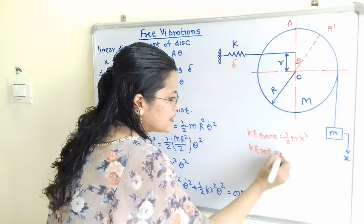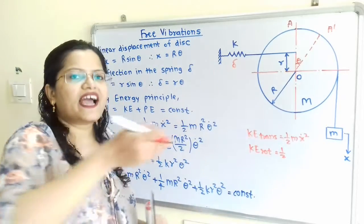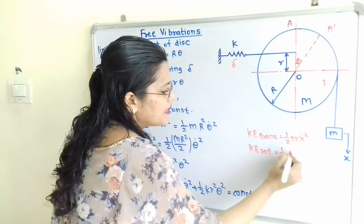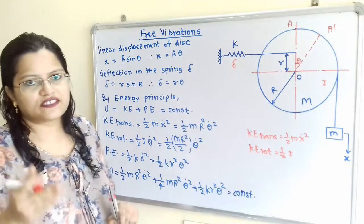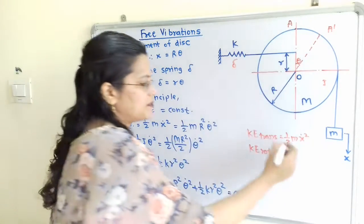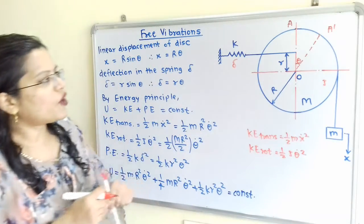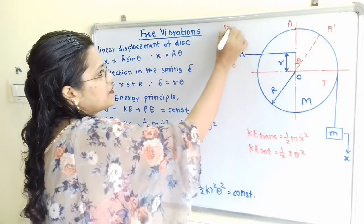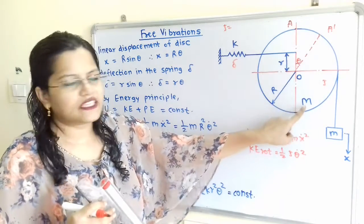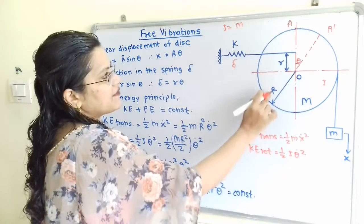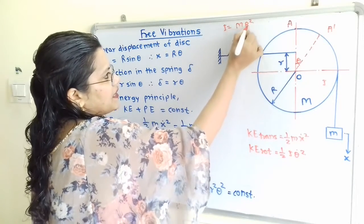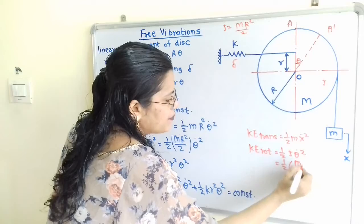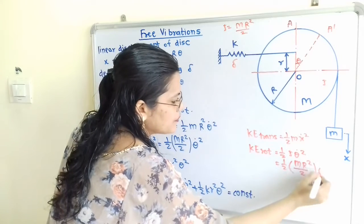KE rotational is equal to half multiplied by the mass moment of inertia I, and instead of ẋ we write θ̇, because theta is the angular displacement. So we write half·I·θ̇². For a disk, the mass moment of inertia is I = MR²/2, where mass is capital M and radius is capital R. So we can write half·(MR²/2)·θ̇².